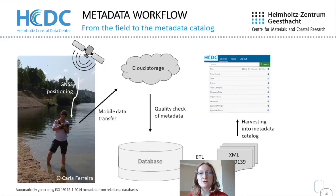In order for this process to work, it is highly important to have rich and detailed metadata. So when our colleagues go into the field for a sampling campaign, we give them a tablet and a high-accuracy GNSS receiver to record their position. They can also add metadata information such as which kind of samples they take to the tablet, and then transfer that information via mobile data transfer to our cloud storage.